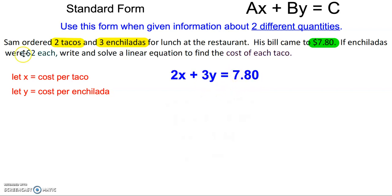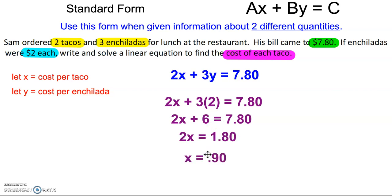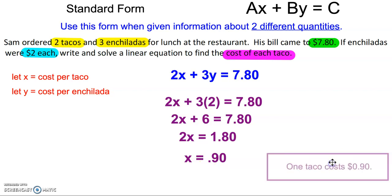Now we want to know: if we know the price of the enchilada, can we find the cost of the tacos? If enchiladas are $2 each, that means we're going to plug that value in for y. And then we can solve for the cost of the taco. We figure out that it's $0.90. So when enchiladas are $2 a piece, one taco is going to cost $0.90.